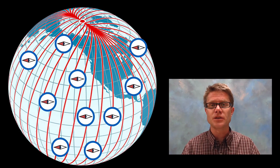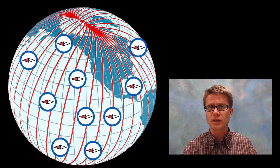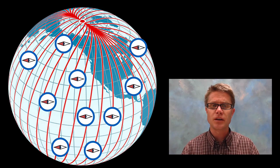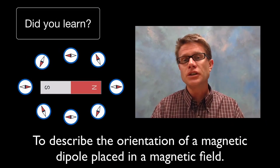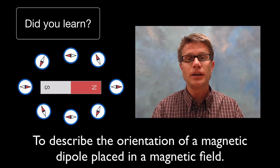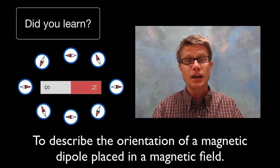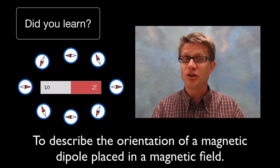And so if we were to take all of these compasses and put them on our planet and then instantly turn on the magnetic field, what are they going to do? They're all going to line up along those magnetic field lines. And so did you learn to describe the orientation of a magnetic dipole inside a magnetic field? Again, you just follow the field lines. And I hope that was helpful.